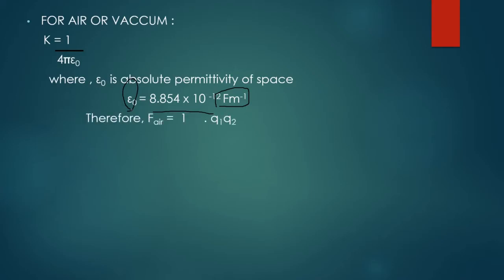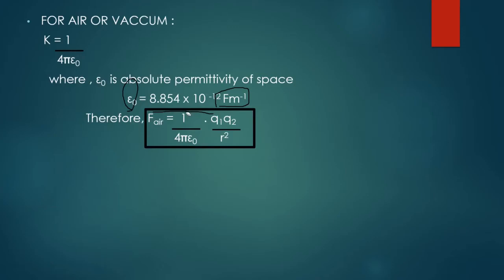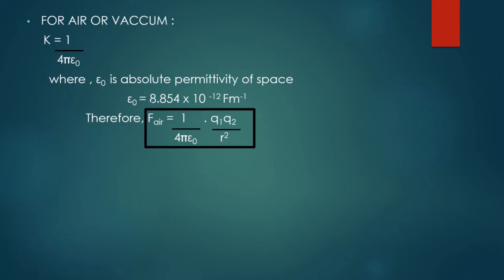Substituting into the previous equation, the force in air or vacuum is: F = q1·q2 / (4πε₀r²). This is very important — highlight it — because you need to solve problems and physics is mainly based on problems. Note that ε₀ is sometimes given in the question and sometimes not, so to be safe it's more convenient to remember it.